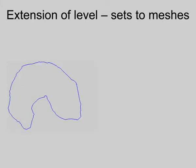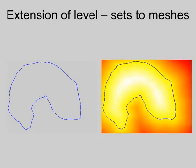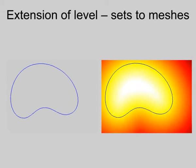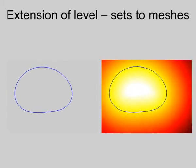Our algorithm is based on active contours, also known as snakes, which are widely used in images. Snakes are dynamic curves that deform by minimizing an energy functional. A major contribution of our work is the extension of the level set framework for snakes from images to meshes.